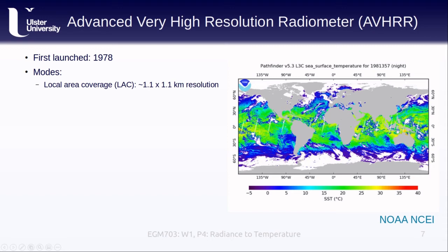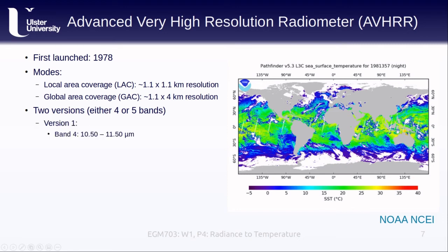AVHRR comes in two different versions that have either four or five bands. The first version acquires in thermal infrared wavelengths between 10.5 and 11.5 micrometers, while the second version has two thermal infrared bands: Band 4 between 10.3 and 11.3 micrometers, and Band 5 between 11.5 and 12.5 micrometers. AVHRR is still in operation on a few different satellites, though the sensor design has since been succeeded by VIIRS. To download AVHRR data, head on over to earthdata.nasa.gov. You'll need to open a free account to access the data.